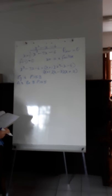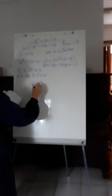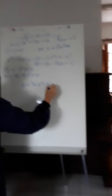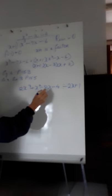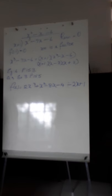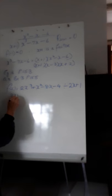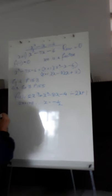That question reads: show that 2x plus 1 is a factor of 2x cubed plus x squared minus 8x. In other words, when this expression f of x is divided by 2x plus 1, the remainder is 0. So let's do it by using the remainder theorem. The divisor is 2x plus 1, so we say 2x plus 1 is equal to 0, which means x is equal to negative one half.